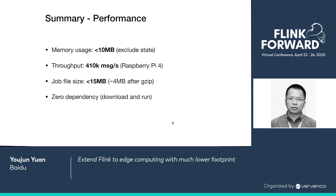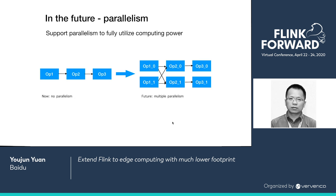In the near future, we are going to support parallelism. Currently, Quick jobs do not support parallelism — each operator has only one instance, which is why cloud servers with 40 cores are not significantly faster than Raspberry Pi. In the future, we need to support parallelism to fully utilize computing power and achieve higher throughput. Users should be able to set parallelism when starting a job and restart the job with a different parallelism.